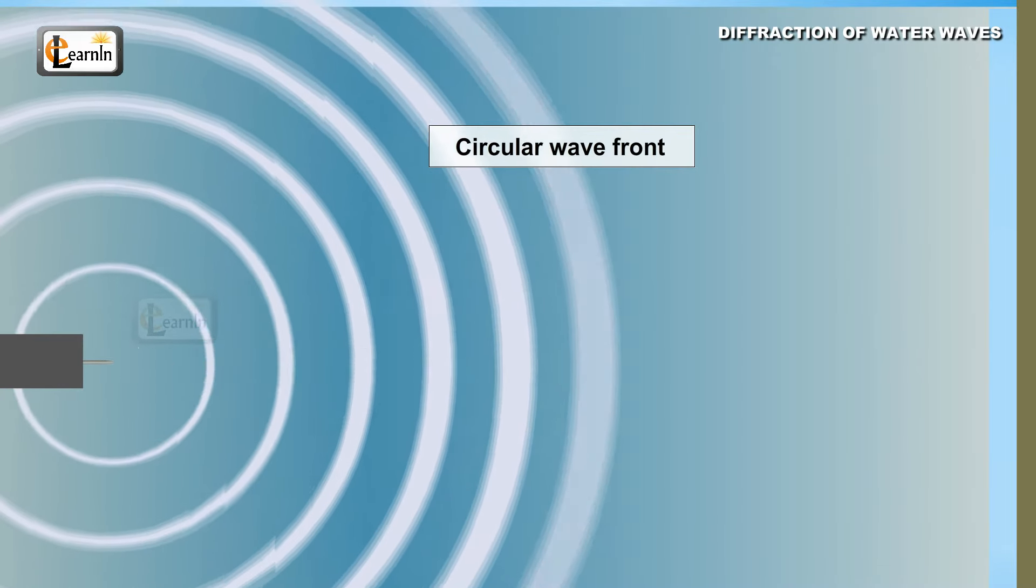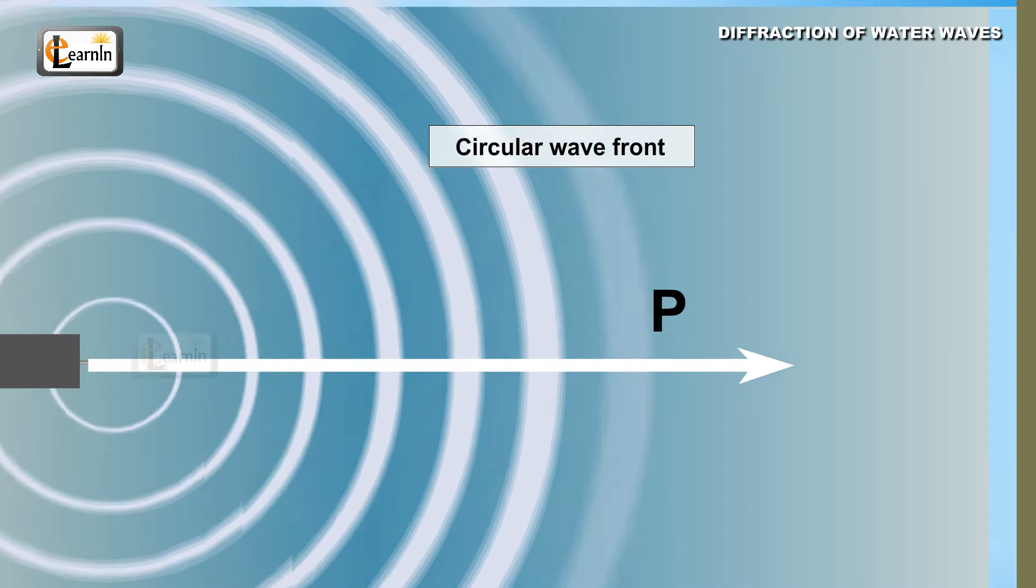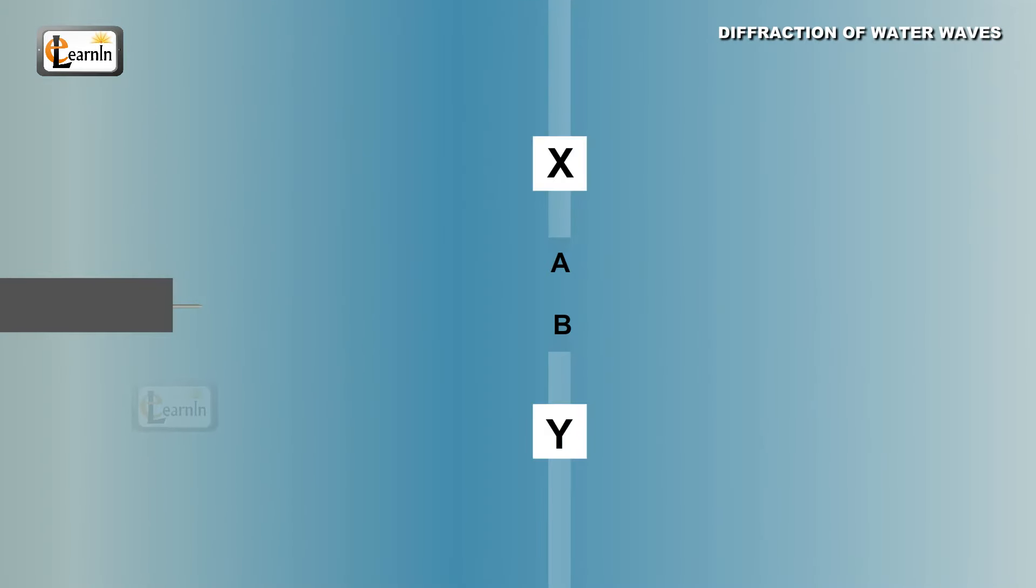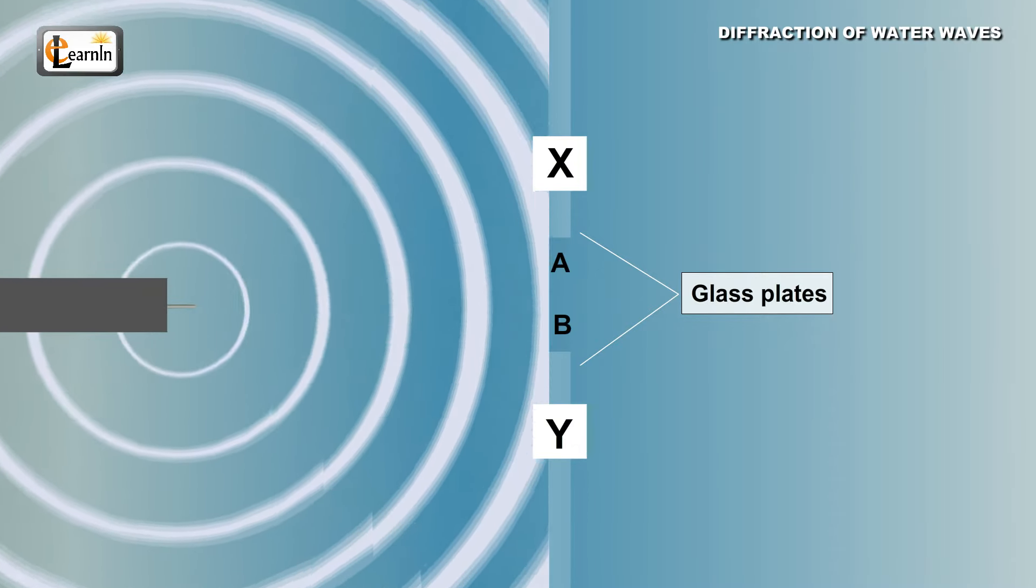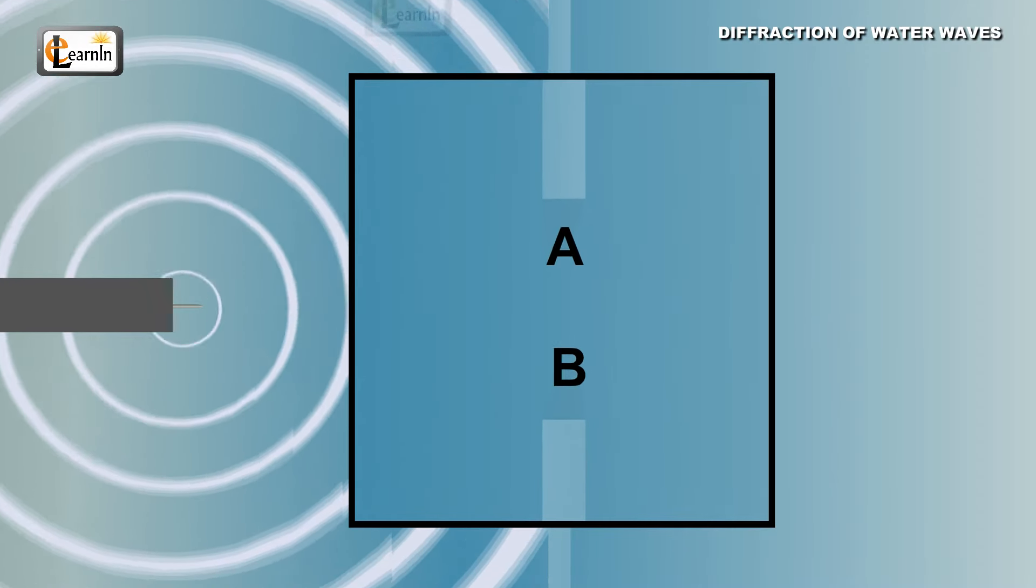These wavefronts would be traveling in the direction along P. Let X and Y be the two vertical glass plates immersed in the tank, far away from the vibrating source, such that there is a gap between them. The plane wavefront MN formed would be incident in AB, where AB act as obstacles.